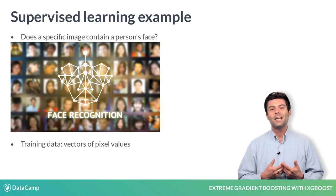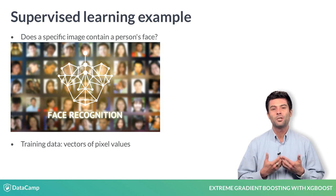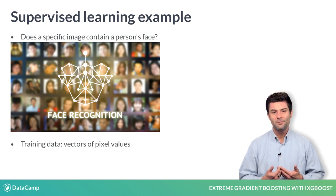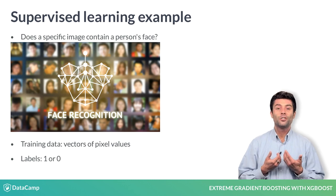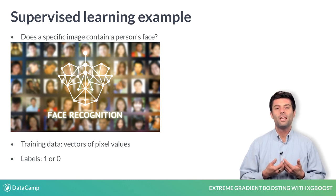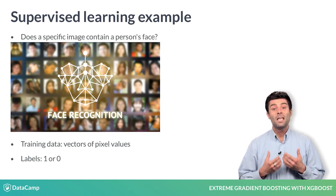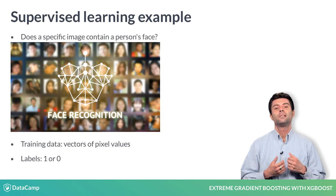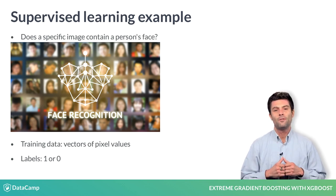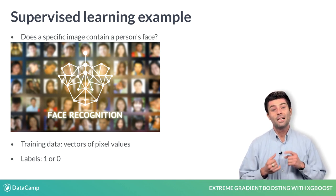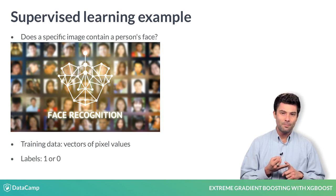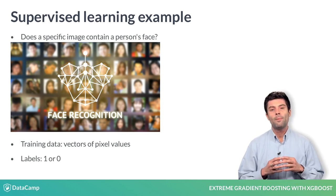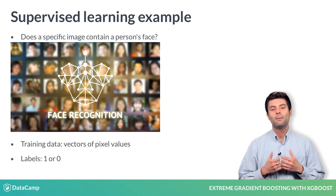Here, the training data are images converted into vectors of pixel values, and the labels are either 1 when the image contains a face, or 0 when the image doesn't contain a face. Given this, there are two kinds of supervised learning problems that account for the vast majority of use cases: classification problems and regression problems. We will only talk about classification problems here and leave regression to Chapter 2.